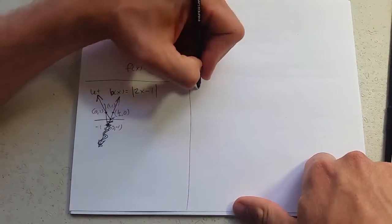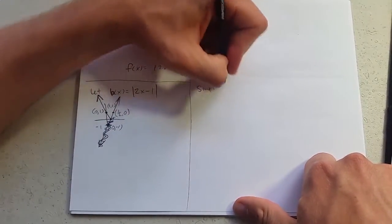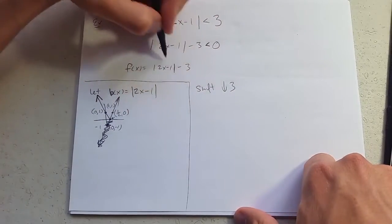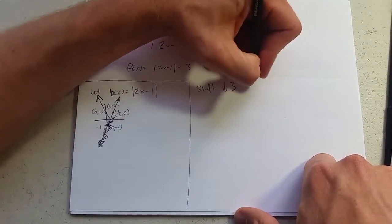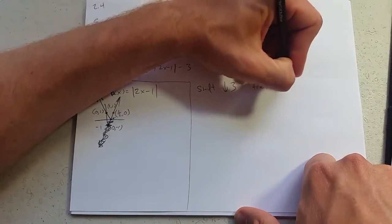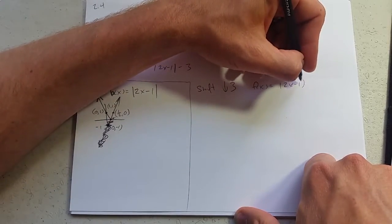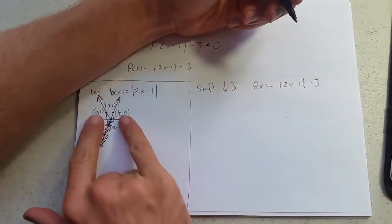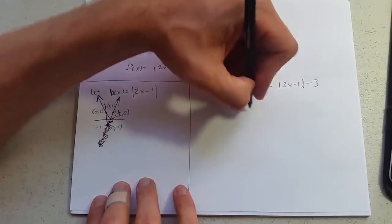So now we're going to shift it down 3. So we're ready to do this full f of x. We're going to take these 3 points and just move them down 3. That's all.